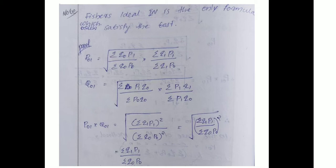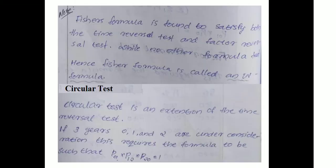Thus, P01 into Q01 gives the root of (summation Q1·P1 squared divided by summation Q0·P0 squared). The root of the square cancels, giving summation Q1·P1 by summation Q0·P0. Therefore Fisher's ideal index number satisfies the factor reversal test.